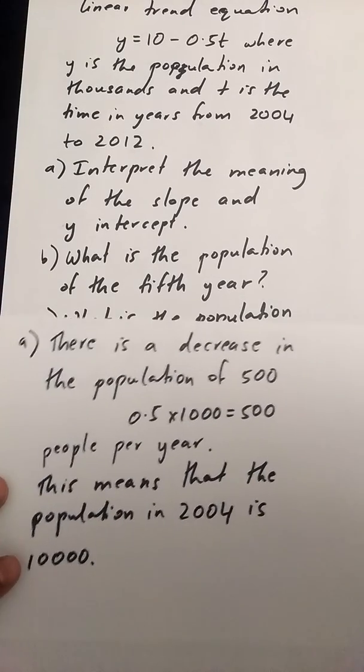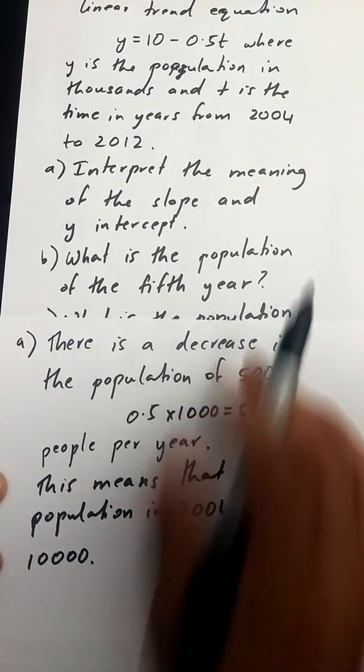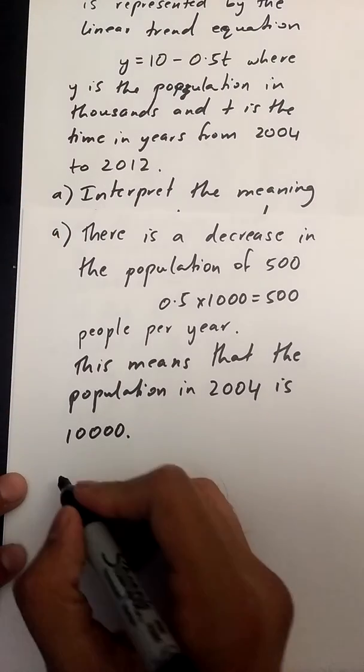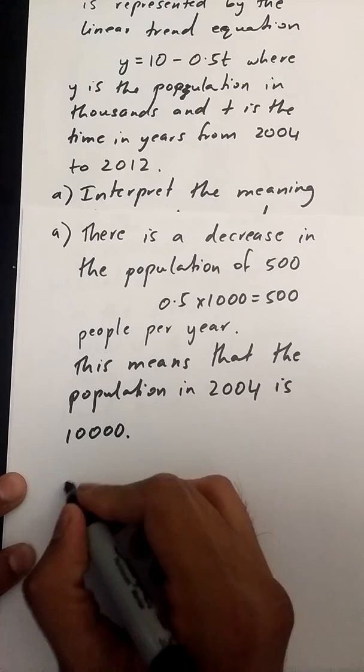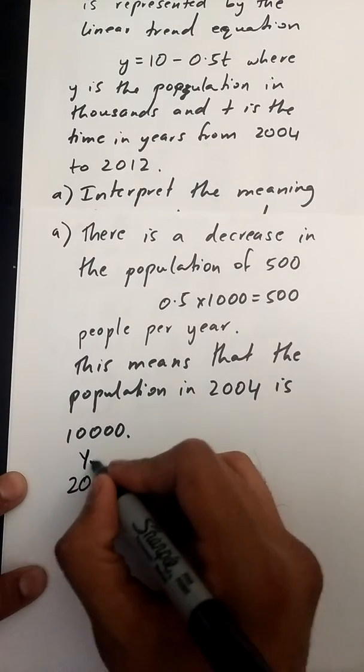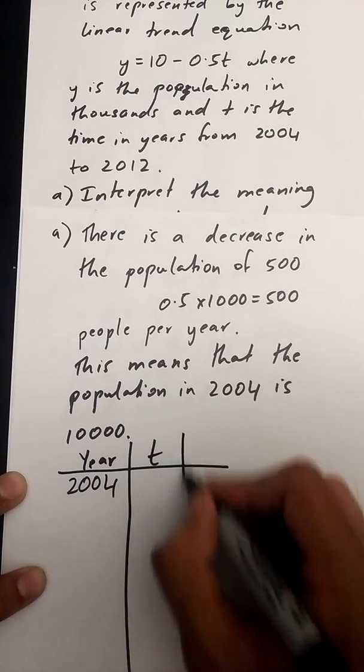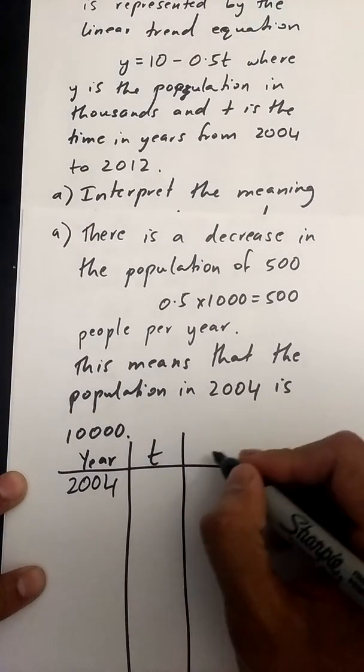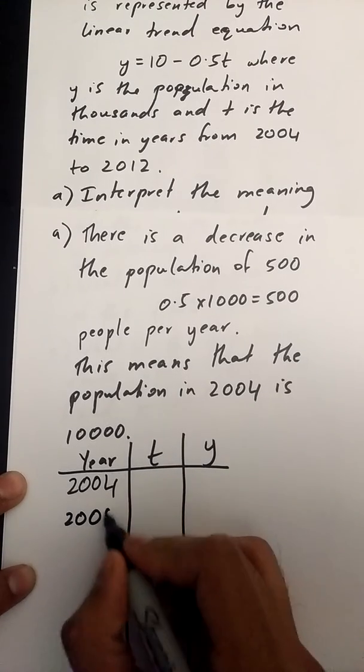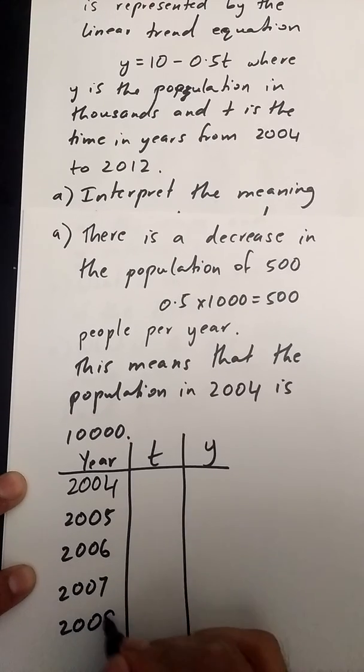The B part of the question asks you what is the population of the fifth year. So if I want to solve this question and find the population of the fifth year, I'm going to make a table. My table is going to start at 2004. That's my year. The next column is my t, and then over here you can call this y, which is your population. So 2004, 2005, 2006, 2007, 2008.